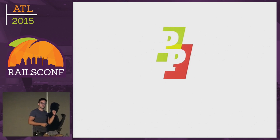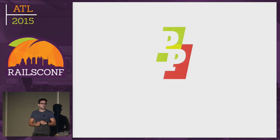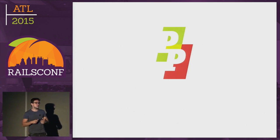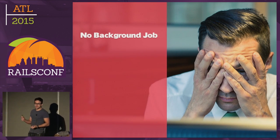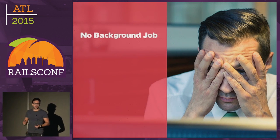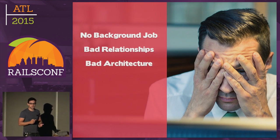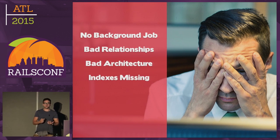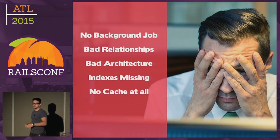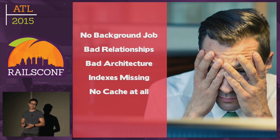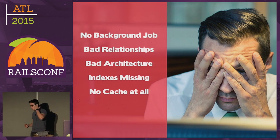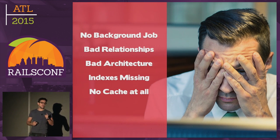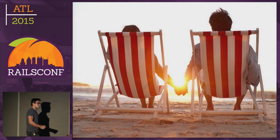If you want to know more about it, you can watch the conf recording. The code was a mess. We were a couple weeks away from the World Cup and not ready for the bunch of users we were about to get. We had no background jobs running, bad relationships, bad architecture, missing indexes, and no cache at all. Our APIs were really, really bad.